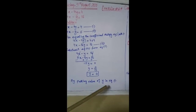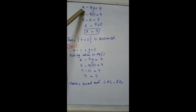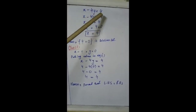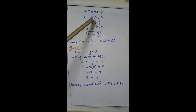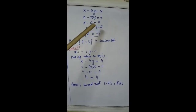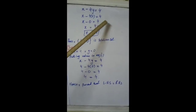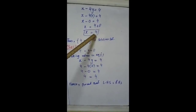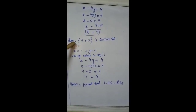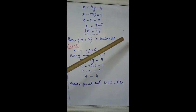By putting the value of y in equation 1: x - 4y = 4 → x - 4(0) = 4, x - 0 = 4, so x = 4. Thus, the solution set is {4, 0}.